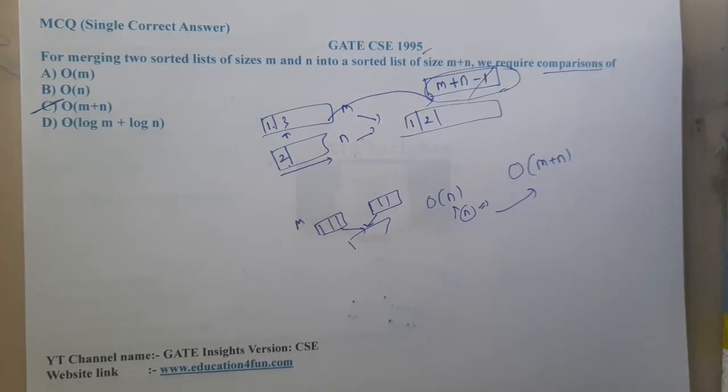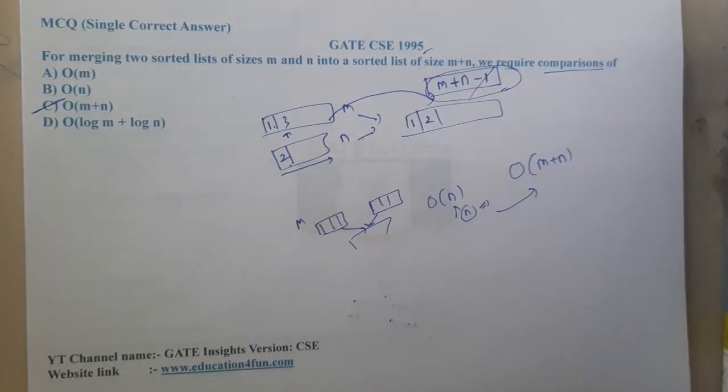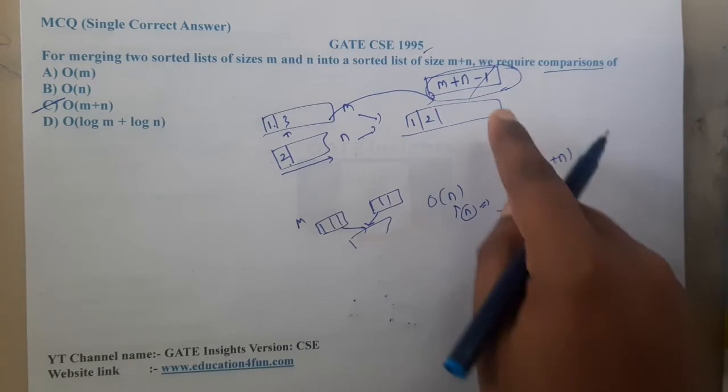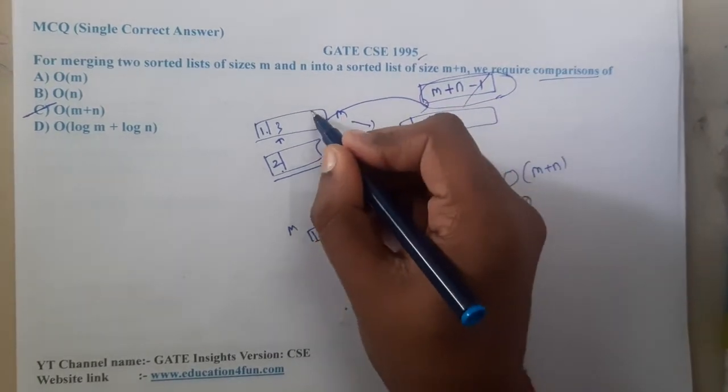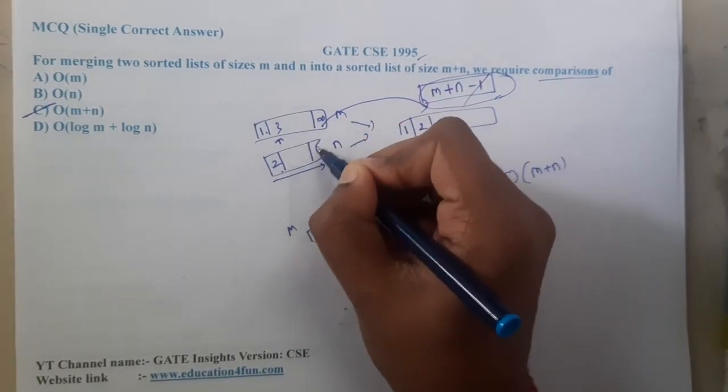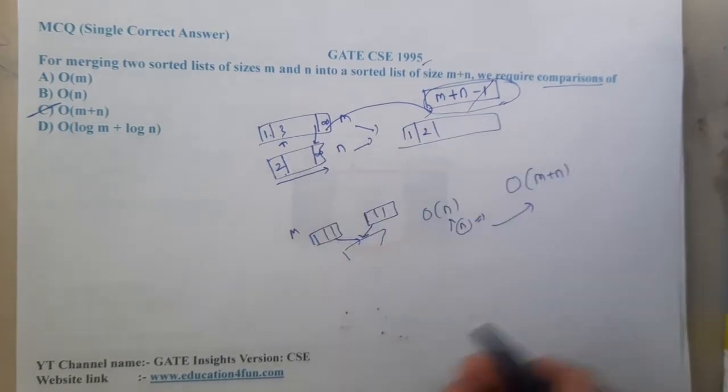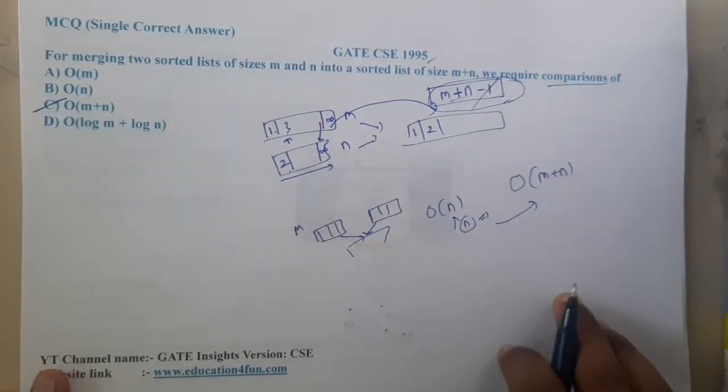we should not do minus one because at the end we place infinity and compare them. Even in that situation, it will be m+n only. The conclusion is the answer will be C only, so there is no change. I hope